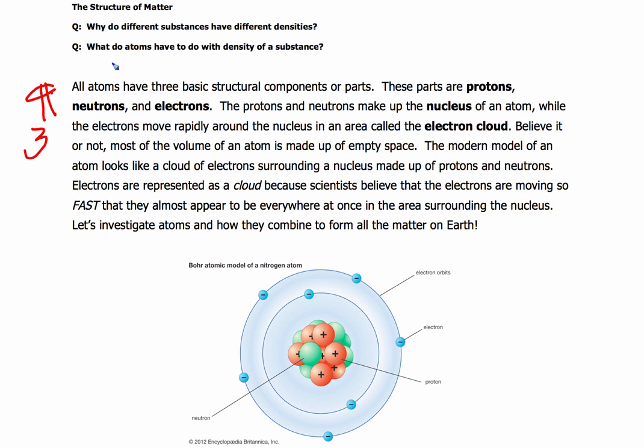Okay, so welcome back. And what do atoms have to do with the density of a substance, and why do different substances have different densities? All atoms have three basic structural components, or parts. These parts are protons, neutrons, and electrons. The protons and neutrons make up the nucleus of an atom, while the electrons move rapidly around the nucleus in an area called the electron cloud. And you can take a look at the little sketch of an atom down below.